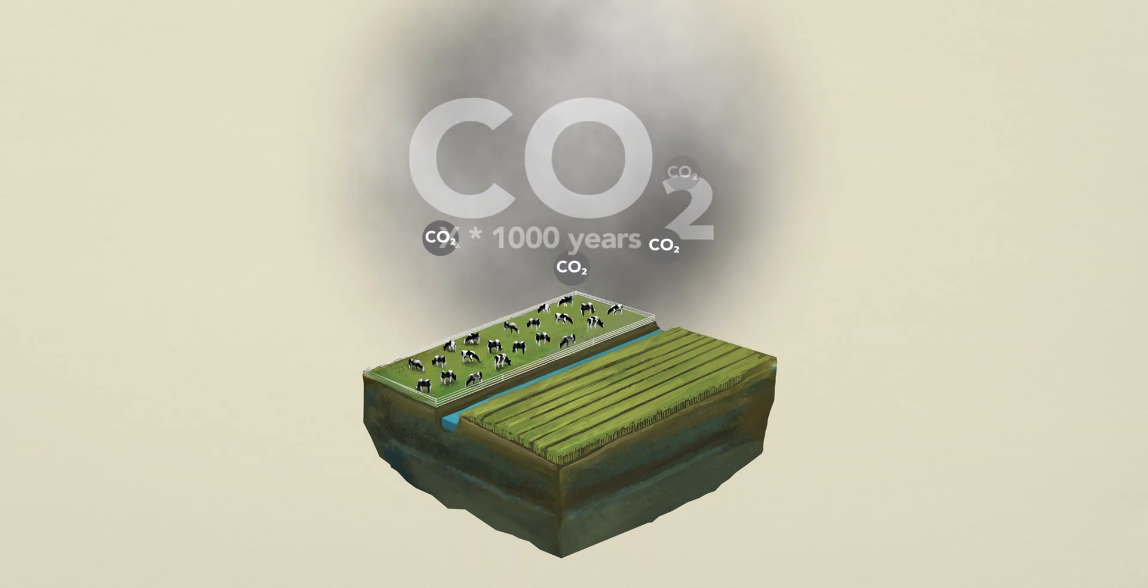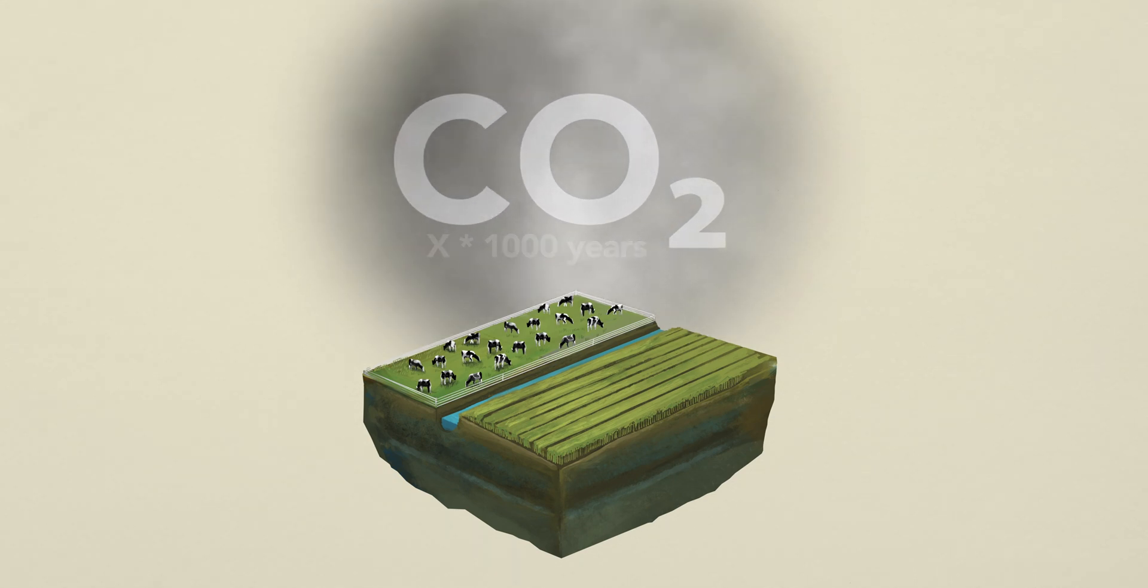Carbon dioxide can stay in the atmosphere for thousands and thousands of years. As long as peatlands remain drained, they will emit carbon dioxide to the atmosphere.